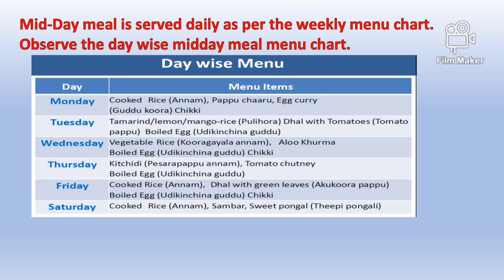Observe the day-wise midday meal menu chart. On Monday: cooked rice, papicharu, yakari and chicki. On Tuesday: purihora, dal with tomatoes and boiled egg. On Wednesday: vegetable rice, aloo kurma, boiled egg and chicki. On Thursday: cooked rice, dal with green leaves, boiled egg and chicken. On Saturday: cooked rice, sambar and sweet pongal.